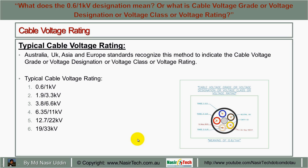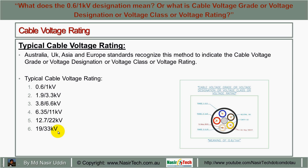Manufacturers provide this information for any kV voltage rating in this format for different types of applications. Typical cable voltage ratings include: 0.6/1 kV, 1.9/3.3 kV, 3.8/6.6 kV, 6.35/11 kV, 12.7/22 kV, and 19/33 kV. For higher voltage installations we can find higher voltage rated cables as well.